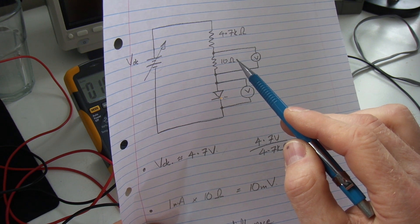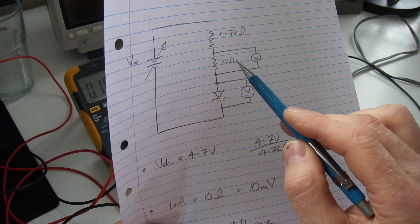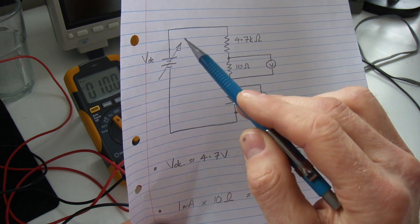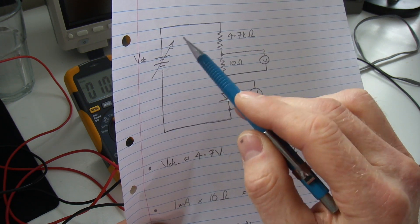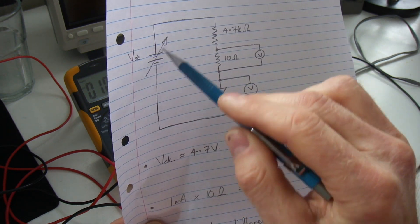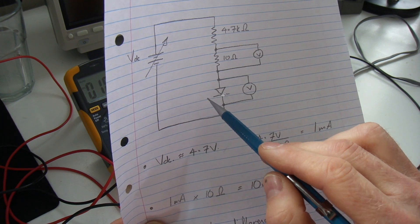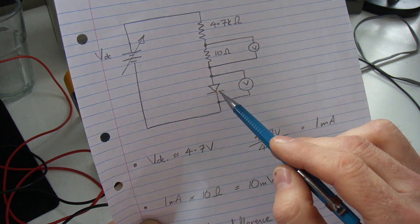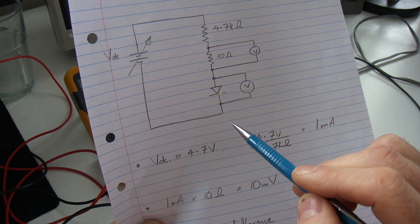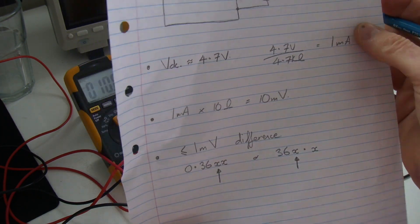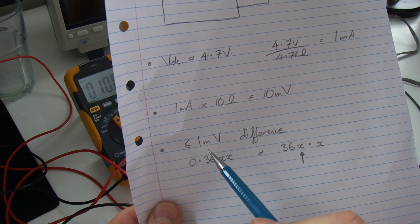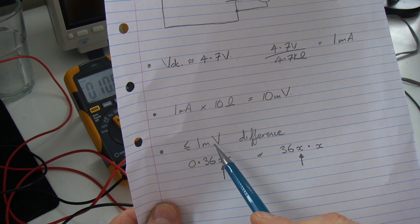For this particular circuit I'm going to be adjusting this power supply voltage to get through the circuit as close as I can to one milliamp in order to try and get a consistent reading across that diode there.